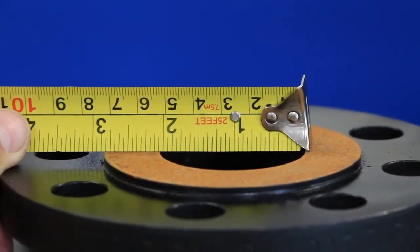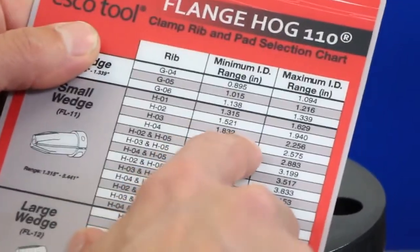After familiarizing yourself with the FlangeHog 110 kit contents, measure the ID of the flange and consult the clamp rib and pad selection chart to determine the tooling configuration.